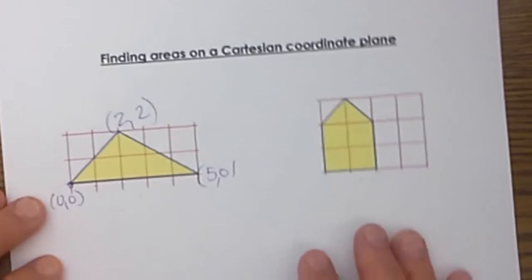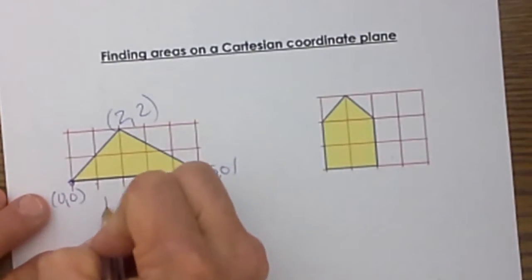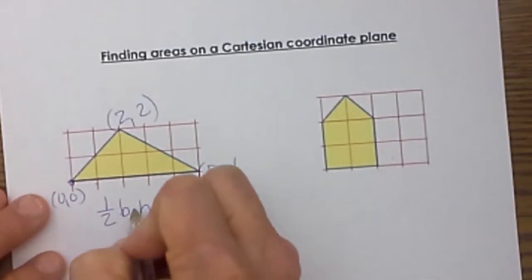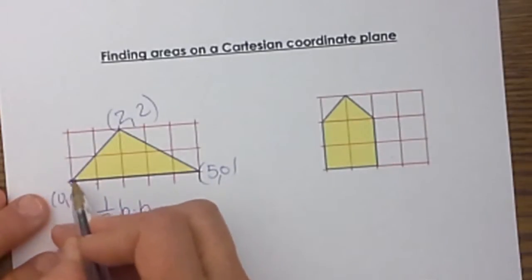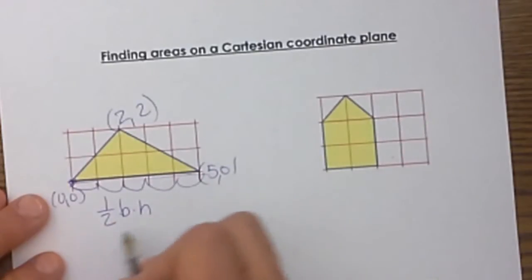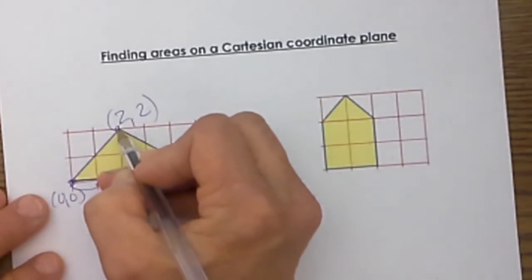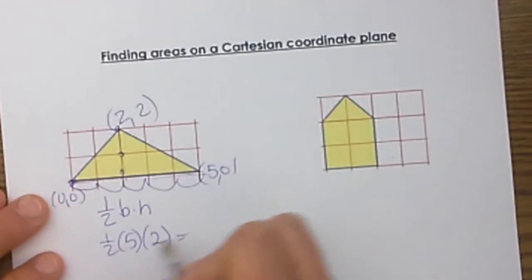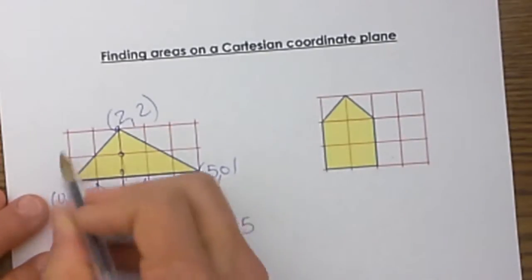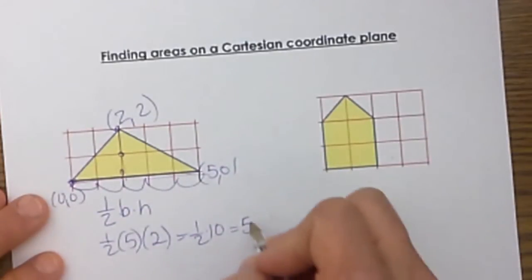Now to find the area of this triangle I am going to use the area formula, 1/2 the base times the height. Because we are on a Cartesian coordinate plane I can count this length. I am going to count the length of this base, well that is 1,2,3,4,5 units long, so my base is 5. My height is from the apex straight down is 1,2, so I have to take 1/2 of 10, and 1/2 of 10 is 5, so the area of that is 5 square units.